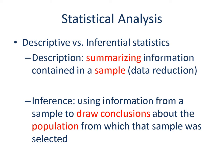Quantitative research collects and documents data in a numerical format. The next step is to analyze the data using statistical analysis. There are two types of statistical analysis: descriptive statistics and inferential statistics. Descriptive statistics summarize information that is contained in your sample. On the other hand, inferential statistics involves drawing conclusions about your population from your sample.